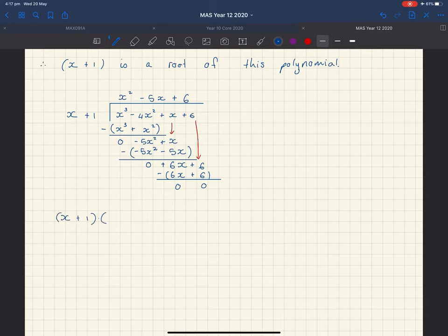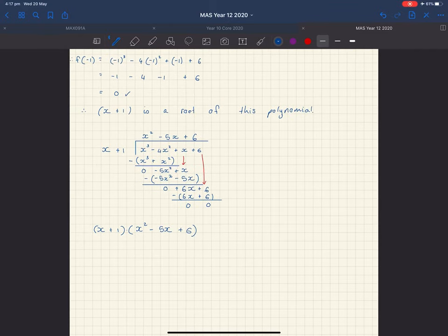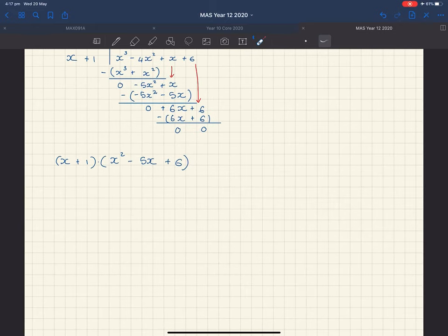This is saying that x plus 1 times this quotient that we've now got on top, this other factor, this trinomial factor because it has three terms, x squared minus 5x plus 6, would equal if I multiply this out the original polynomial, this big cubic polynomial. But what you can see here is I could probably factorize this second factor a little bit further, and I wouldn't even have to do long division or anything like that. Just looking at that I can see, hey, I can pull out two brackets quite easily.